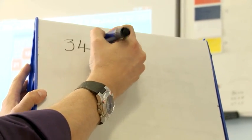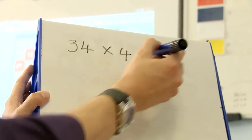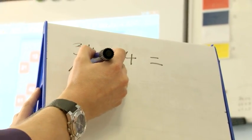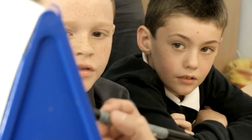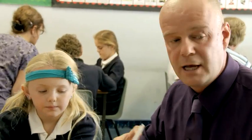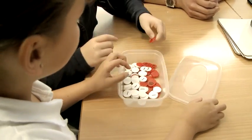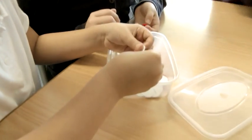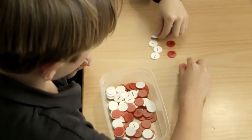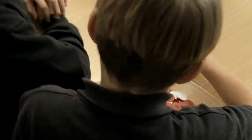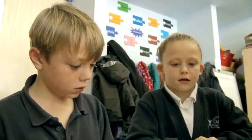The first number sentence we're going to look at is 34 multiplied by 4 equals. So, what can we partition 34 into? 30 and 4. The place value counters were useful to move into the grid representation because the children could see the array of the numbers and could actually see the multiplication factor they were trying to work out visually.